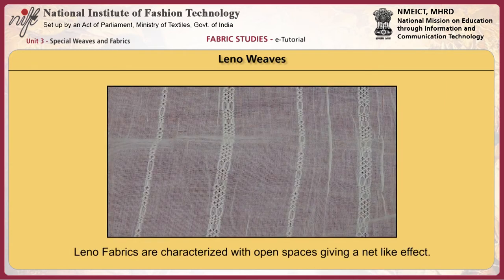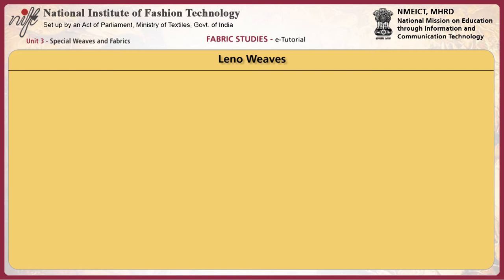Leno fabrics are characterized with open spaces giving a knit-like effect. The warp and weft yarns do not interlace with each other. Rather, pairs of warp yarns twist around weft yarns. This creates an open constructed fabric which is firm and strong without much yarn slippage.